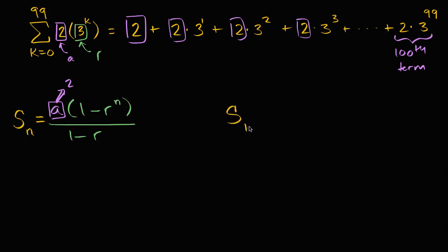So what we really want to find is S sub 100. So let's write that down. S sub 100 for this geometric series is going to be equal to two times one minus three to the hundredth power, all of that over one minus three.